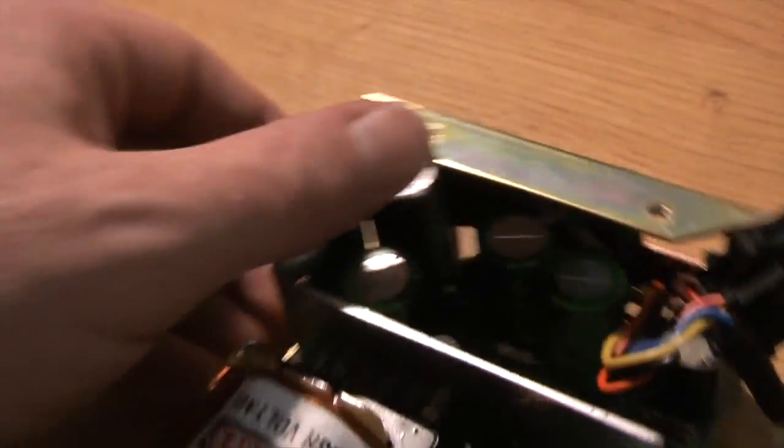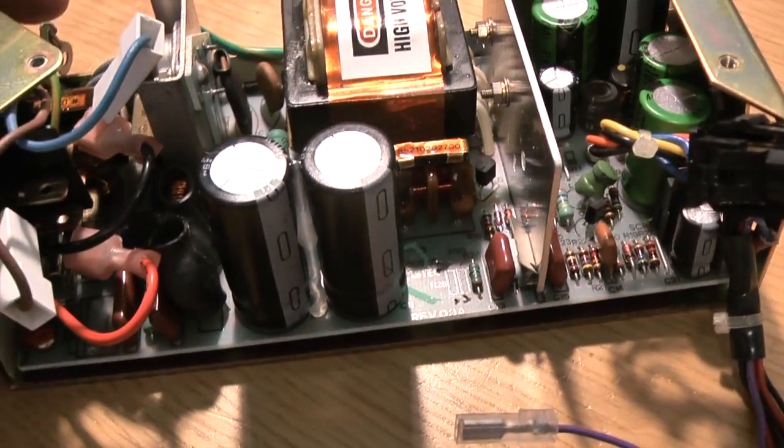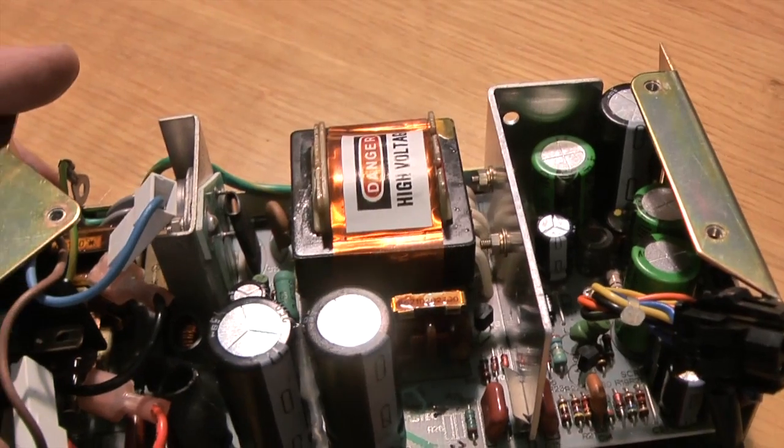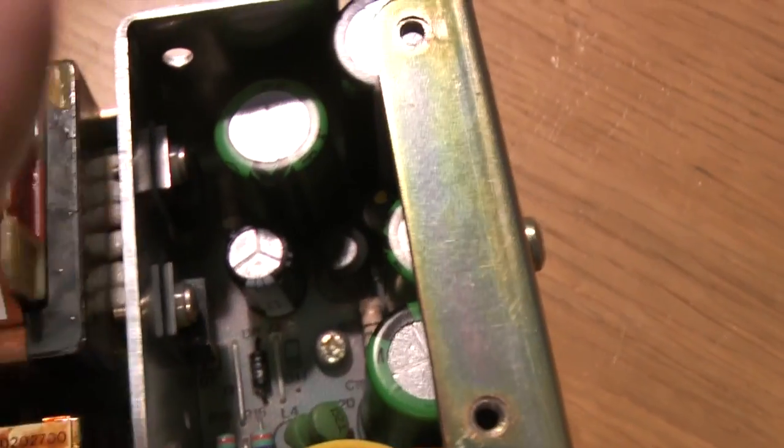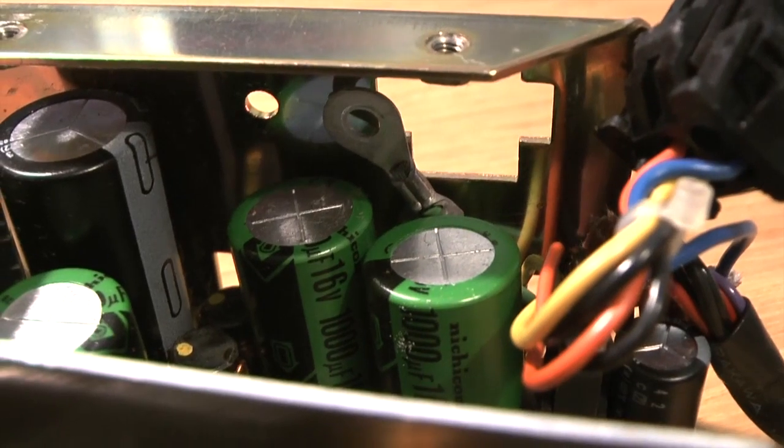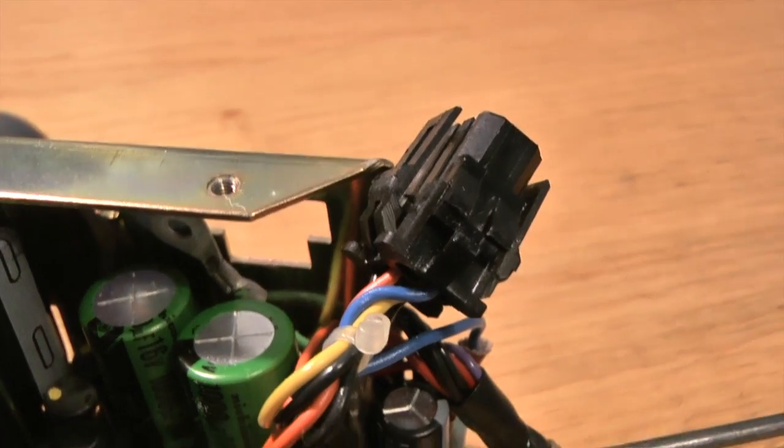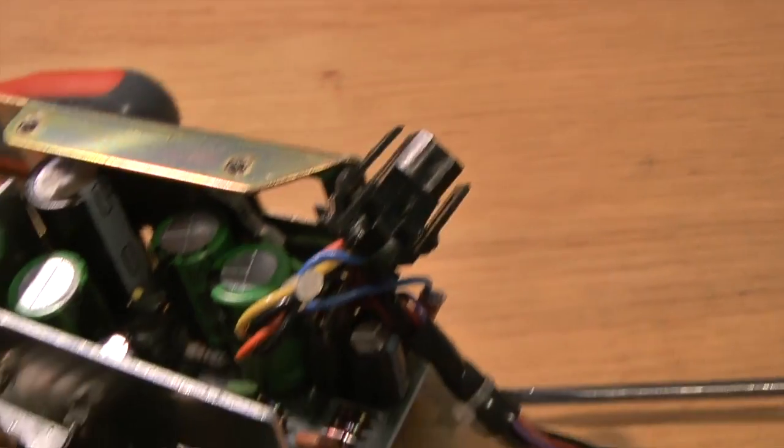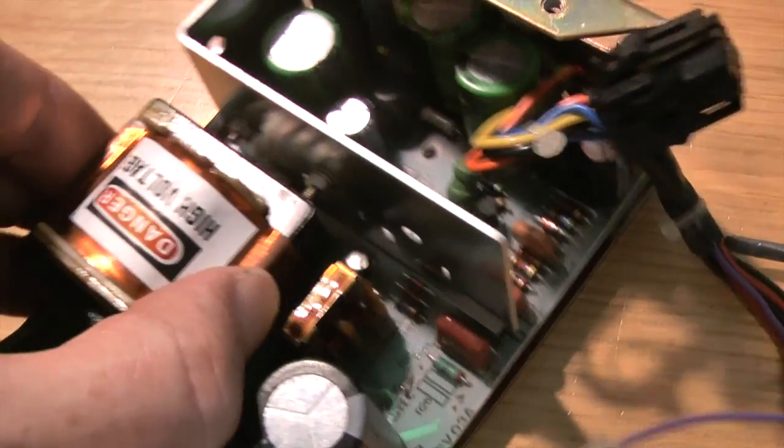There's one more earth connection to go, which is here. Remove that, then the board should be free to come out once we've removed the mounting screws. That one there, one in here, and one over there at the far corner. So that's the earth connection removed, the auxiliary power connector is free, and the three screws that hold down the PCB have been removed. So that's all nice and mobile.